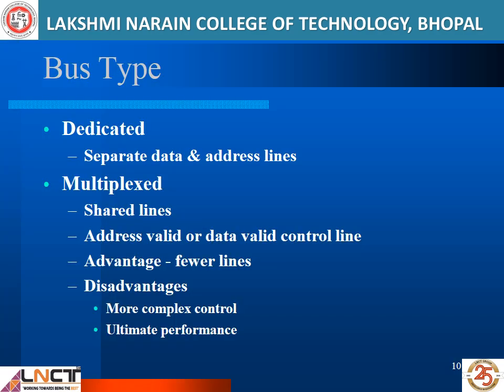There are two bus types: dedicated bus, where separate data bus and address lines exist, and the multiplex bus. In a multiplex bus, the processor does not have separate lines for data transmission and address transmission. Instead, the processor shares those lines. At some point in time, with a control signal, the bus is considered the address bus, and at another point in time, the same lines are considered the data bus.